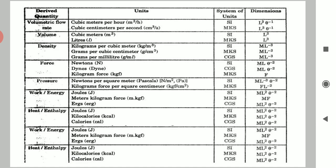Next we will see the derived units or derived quantities. The first is volumetric flow rate — the amount of any fluid flowing in unit time. Its unit will be volume per time, so it is meter cube per hour, or a smaller unit would be centimeter cube per second. You can also use liter per second as another unit of volumetric flow rate.